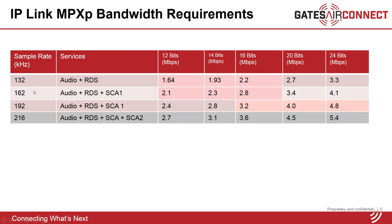The higher the sample rate, the higher the wide area network bandwidth requirement. Both 162 and 192 kHz sample rates will transport up to the SCA1 subcarrier. You would select 192 kHz sample rate to bypass the input sample rate converters — in other words, for transparent transport. With 24-bit sample width, that requires 4.8 megabits per second of stream bandwidth. MPXP also supports 216 kHz sample rate to carry the entire FM spectrum up to the SCA2 subcarrier.